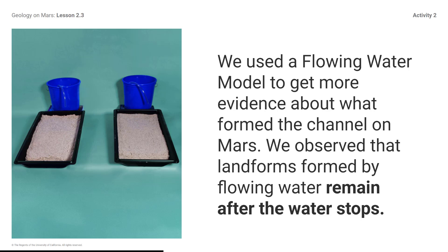We used a flowing water model to get more evidence about what formed the channel on Mars. We observed that landforms formed by flowing water remain after the water stops. That means the channel on Mars could have been formed by flowing water even though there is no flowing water there now.